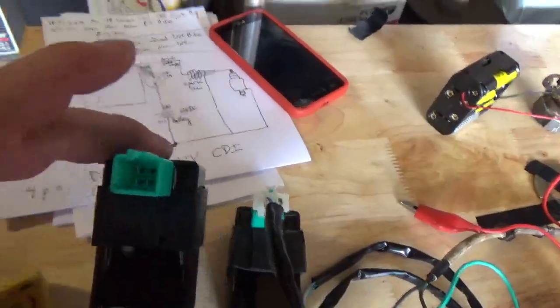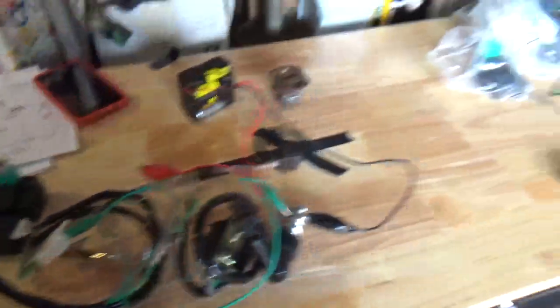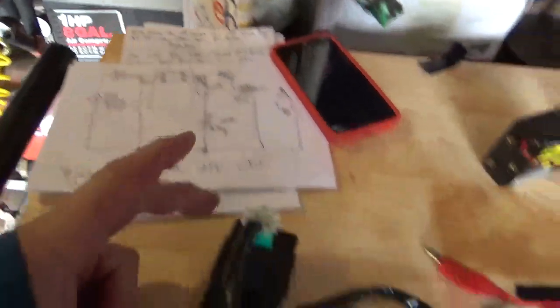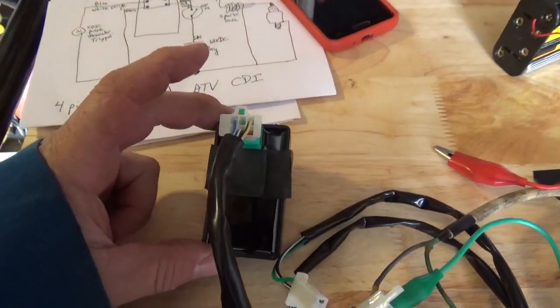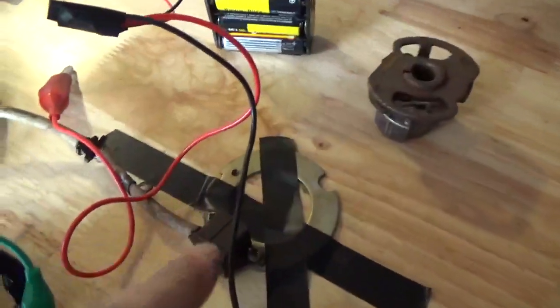After you get these things in the mail, you take your AC CDI box, your spark plug, and your on and off switch and you put them off by themselves for a moment. You take your DC CDI and you plug it right in. You do not have to change a wire, you don't have to do anything, you plug it right in.